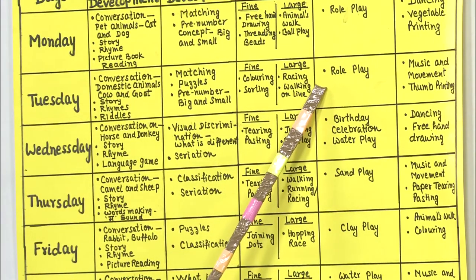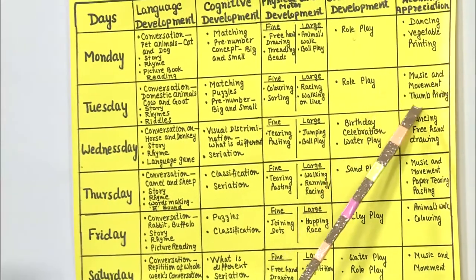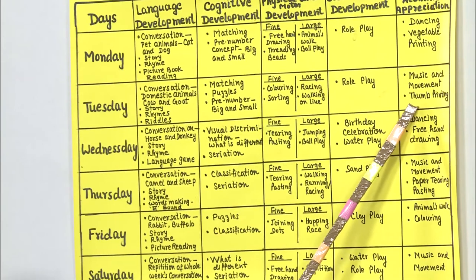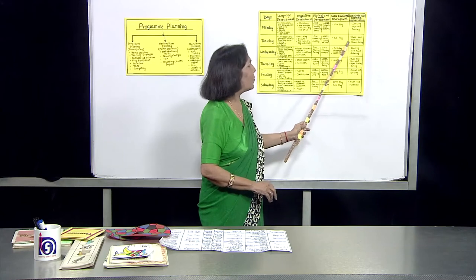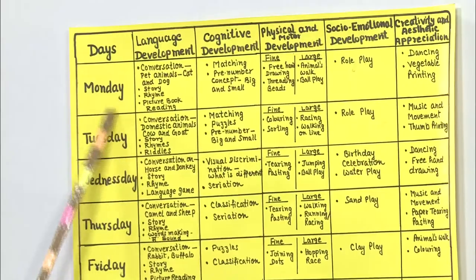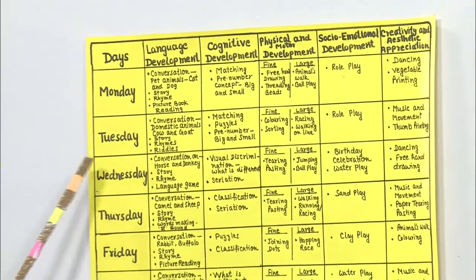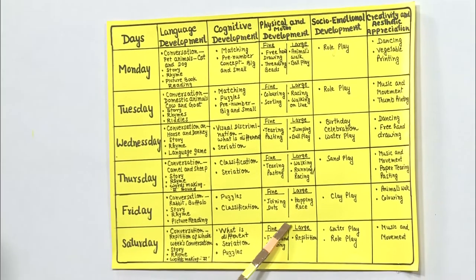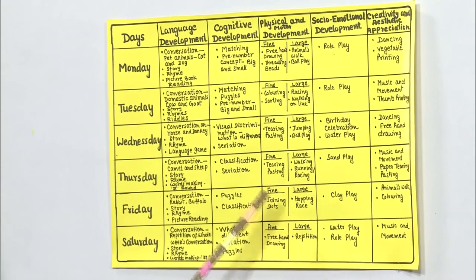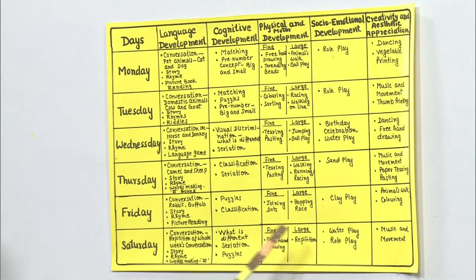For socio-emotional development on Tuesday, we will repeat role play. For creativity and aesthetic appreciation, we will do music and movement — play music and children move their body — and thumb printing. In this way we can proceed on Wednesday, Thursday, Friday, and Saturday. Saturday will mostly be for repetition of whatever we have done throughout the whole week.